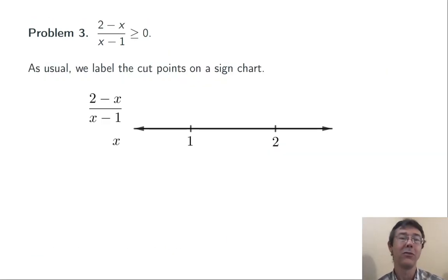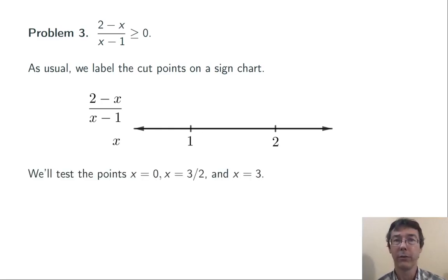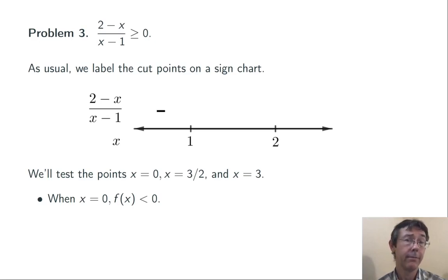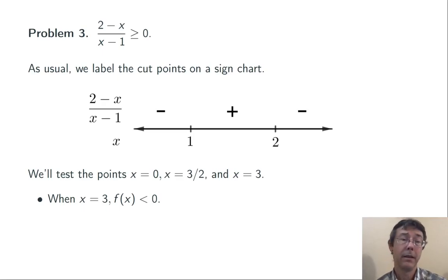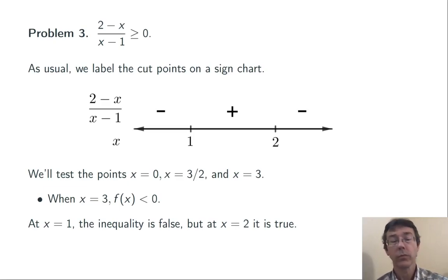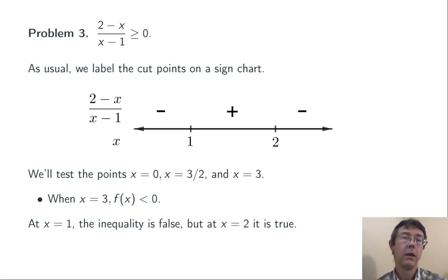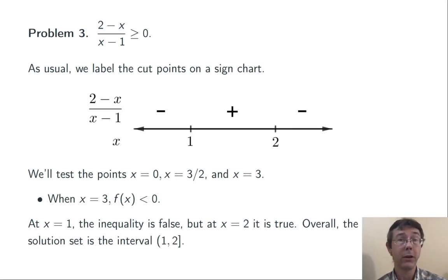Here's the sign chart — the number line with those two values labeled. I need to check points in each of those three intervals. We'll do zero, one and a half, and three. When x is zero, I'm getting a positive over a negative, so the function is negative there. When x is one and a half, I have a positive over a positive. And when x is three, it's a negative over a positive. So overall, the function goes negative, positive, negative. I'm interested in where it's greater than or equal to zero, so the inequality is going to be true from one to two. Checking endpoints: the inequality is false at x equals one because I've got a zero in the denominator, but true when x equals two — I get zero greater than or equal to zero. So the answer is the interval from one to two, with one omitted but two included.